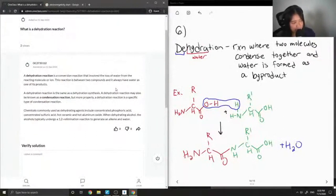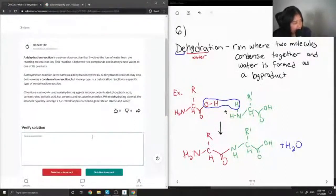Chemicals commonly used as dehydrating agents include concentrated phosphoric acid, concentrated sulfuric acid, hot ceramic, and also hot aluminum oxide. When dehydrating alcohol, the alcohols typically undergo an elimination reaction to generate an alkene and water. I think they just mean an elimination reaction. Nonetheless, this solution is still correct.